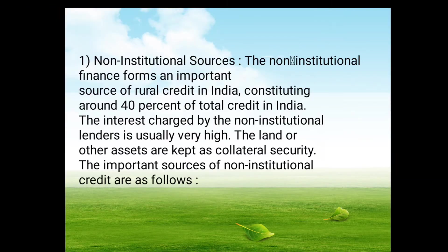Credit requirements can be further classified into two types: productive and unproductive loans. There are two sources of credit available to farmers — institutional and non-institutional. Institutional credit refers to loans provided to farmers by cooperative societies, cooperative banks, commercial banks including regional rural banks.